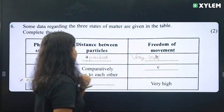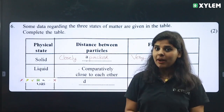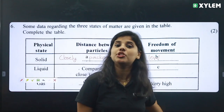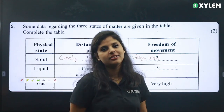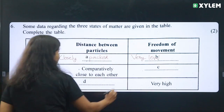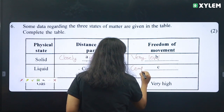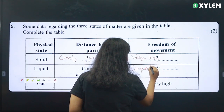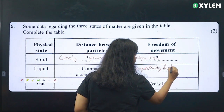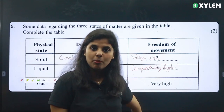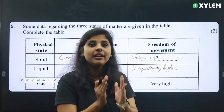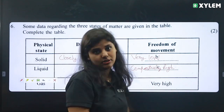In liquid state, the distance between particles is comparatively close to each other. Freedom of movement in liquid is comparatively higher than that of solids.